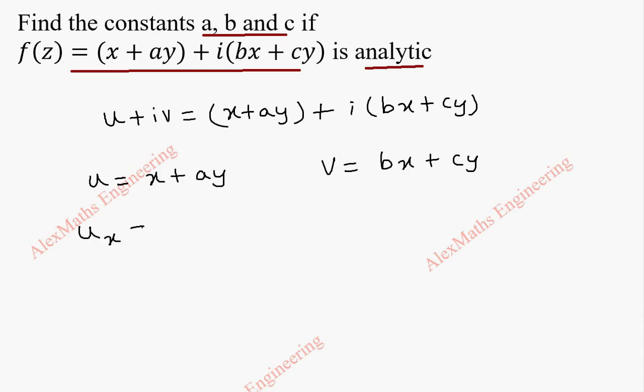Now partial derivative of u with respect to x is 1, and partial derivative of u with respect to y will be a because x differentiation is 0 and the y is 1 and a will stay as it is. In the same way, partial derivative of v with respect to x is b, and partial derivative of v with respect to y is c.